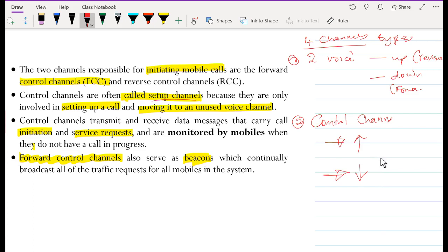The forward control channels serve as beacons, which continually broadcast all the traffic requests for the mobiles in the system. The concept of beacon is quite familiar. You might be in a room watching a television, but then when a call is coming, you hear some sound that tells you that there's a call that is about to start. That kind of beacon, those signals that are sometimes received even by the radio or by the TV, are the ones that are called beacons.